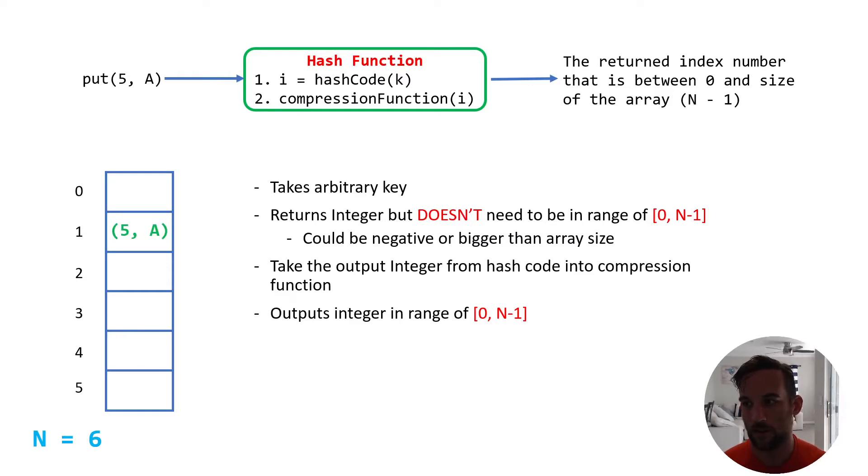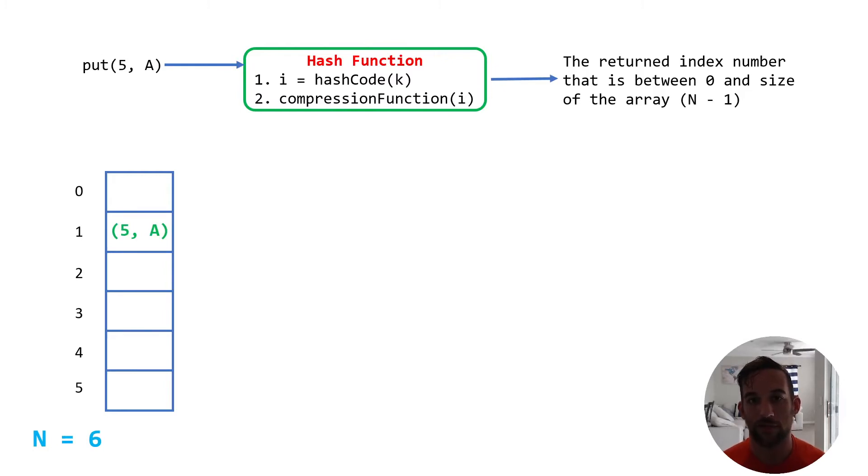So now let's look at what can happen if we have a collision, which is whenever we try to have two different keys into the same index. So here we already know that we have, that we tried to insert the key value pair 5a, and we tried to put this through the hash function, and it came out with the value of 1 as the integer. So that 1 means that we inserted that into the corresponding index in the array, which is index 1. So that's where it's stored right here.